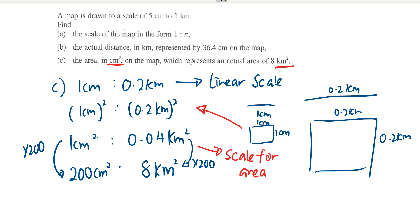The important notes: Number one, always for scale it must be same units on both sides. Number two, the 1 cm is to 0.2 km, always use this as your starting linear scale.